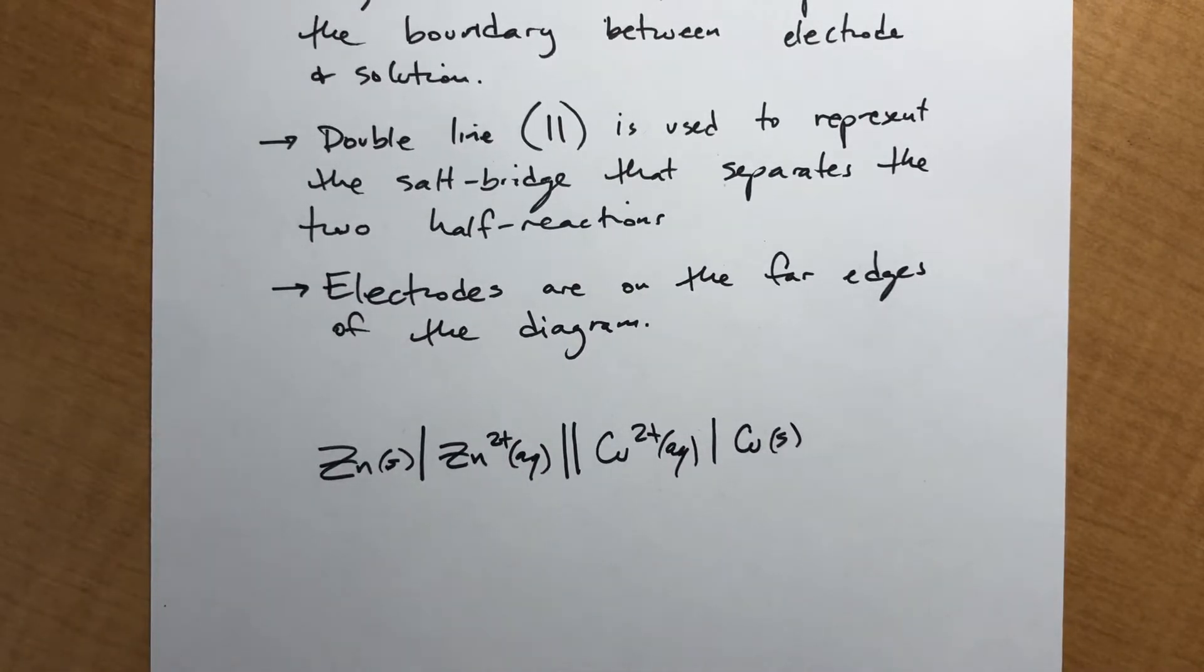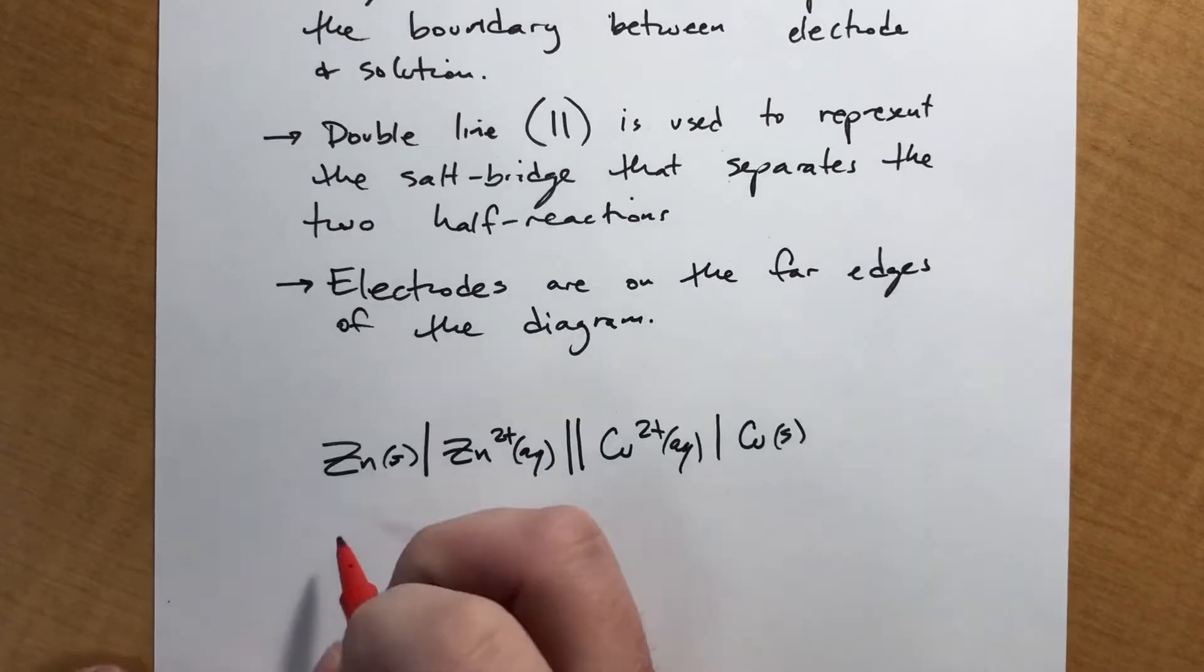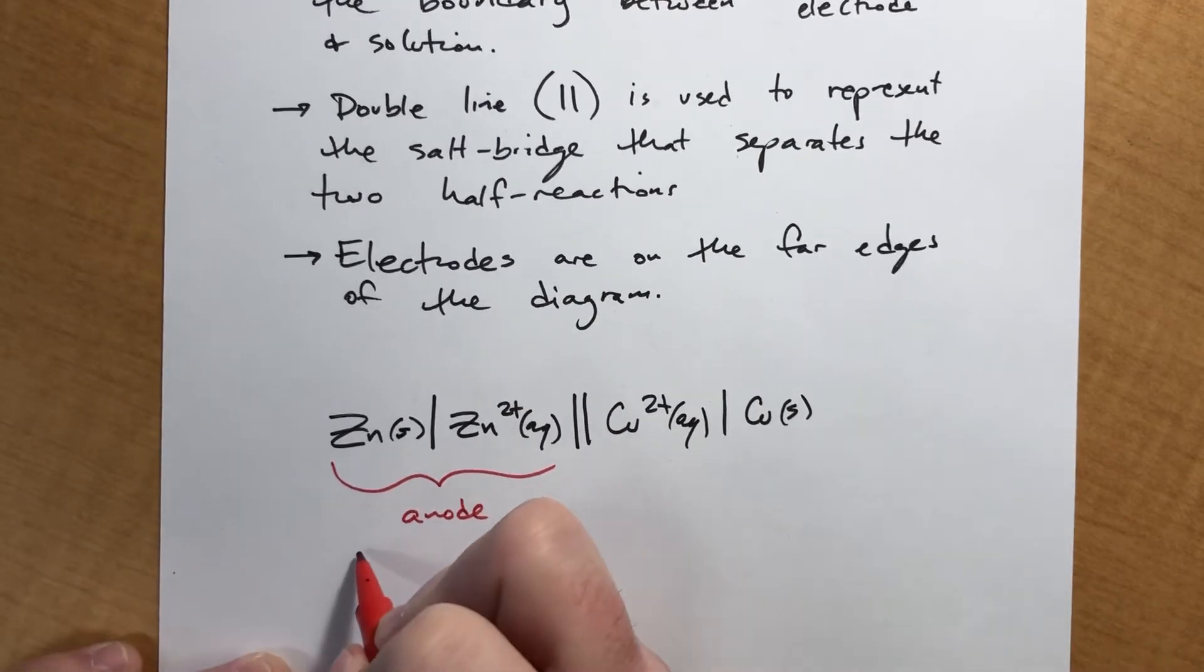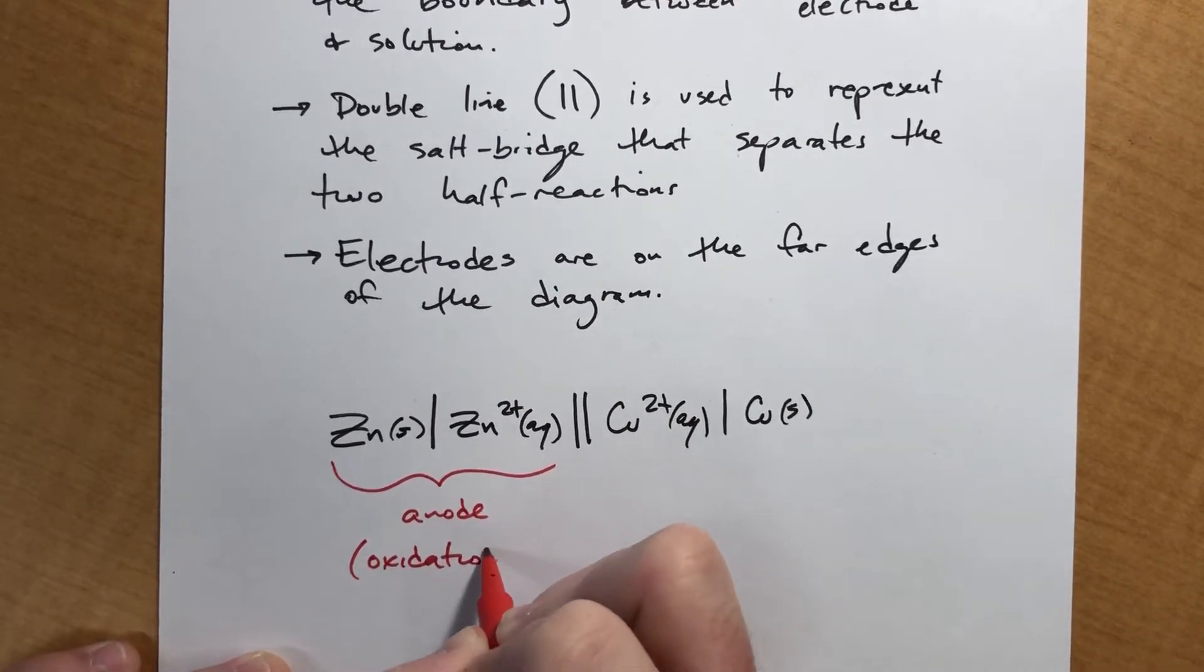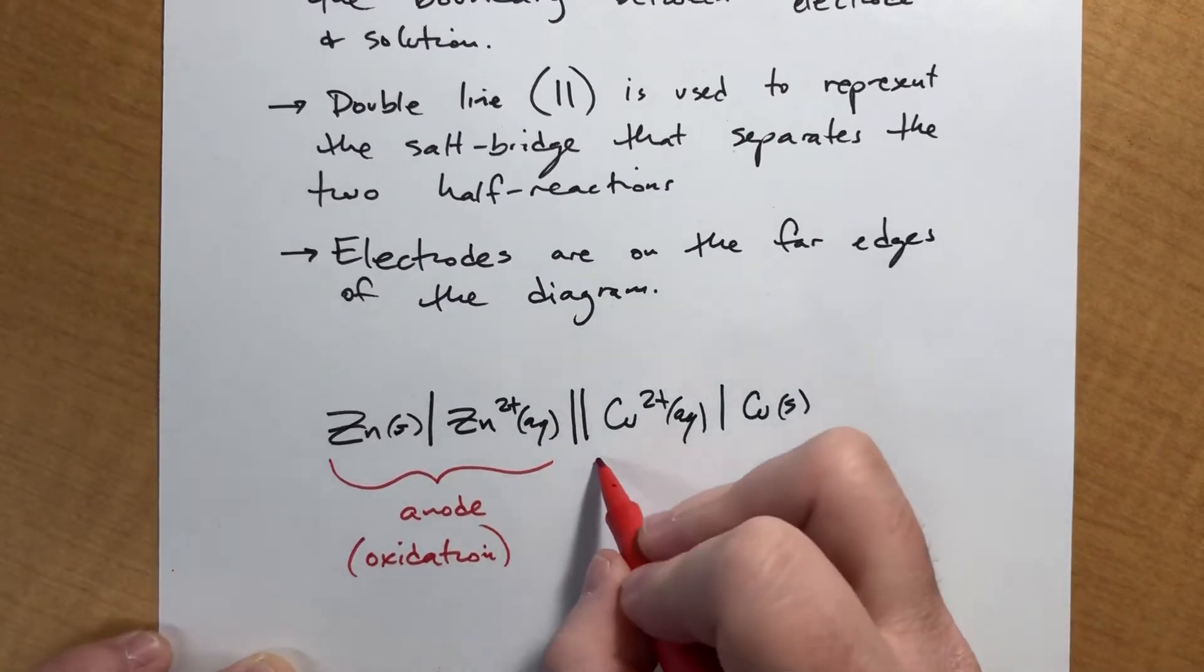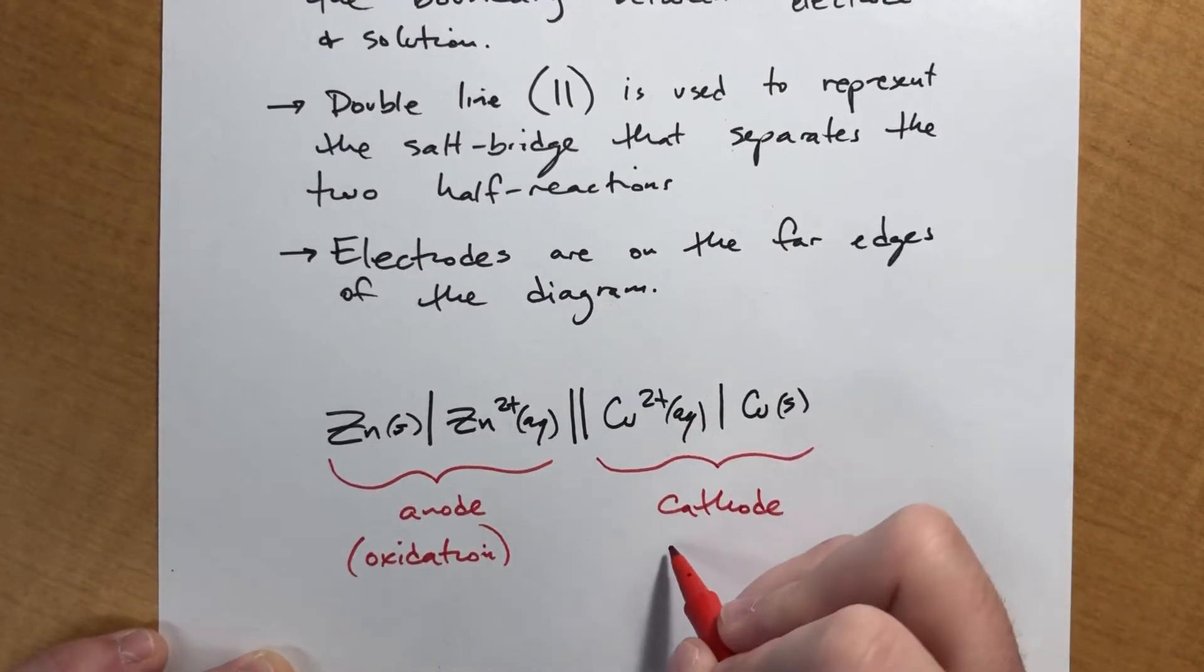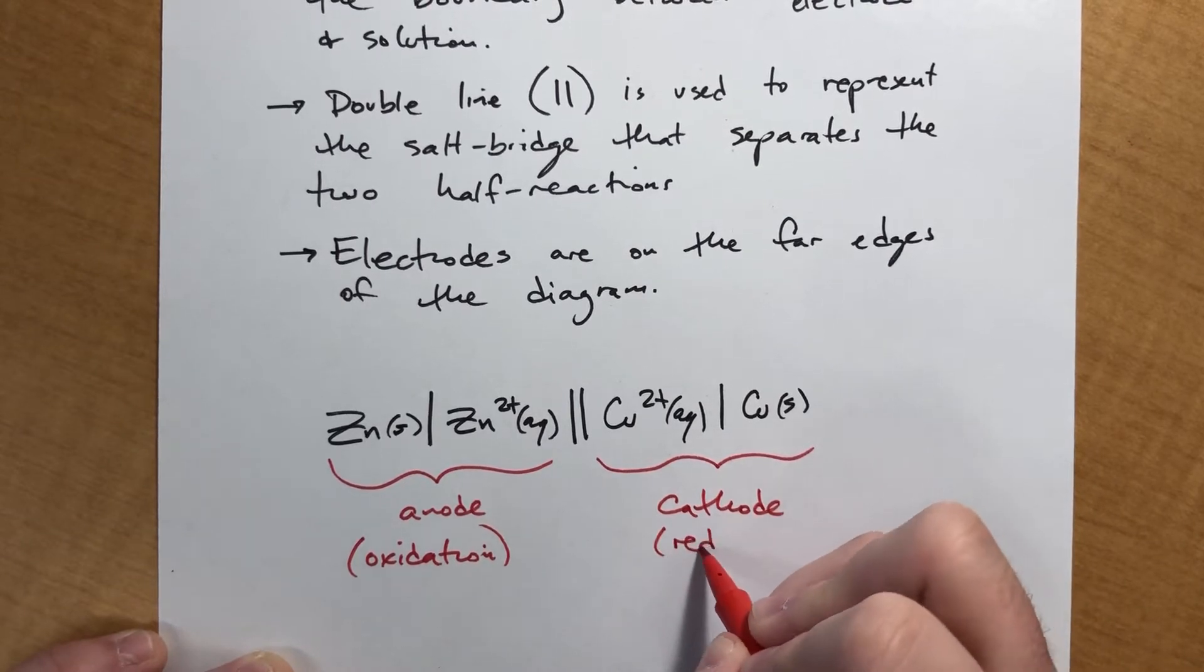So just to make sure you can look at this later and see what's going on, let me label everything really quickly. So this is the anode, which is the oxidation process. This is the cathode, which is the reduction half, or the reduction half reaction.